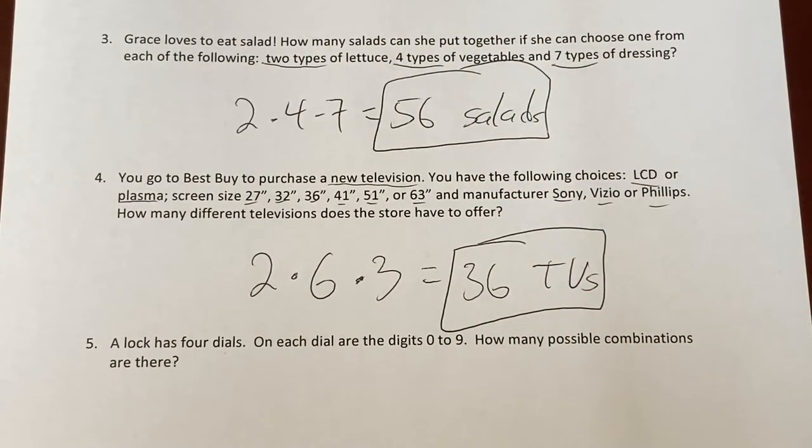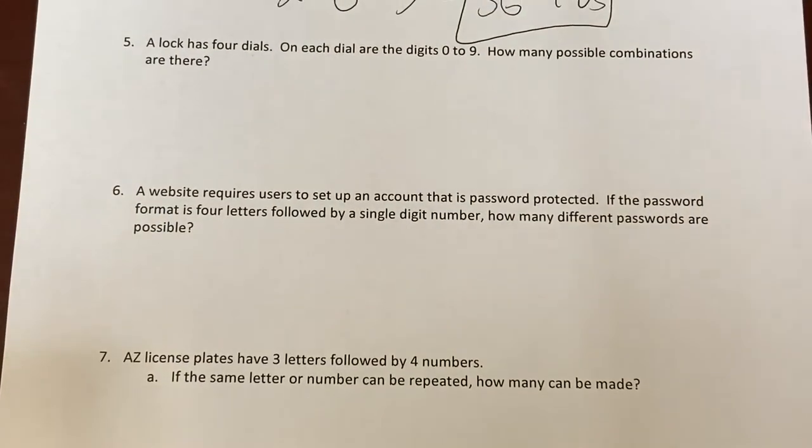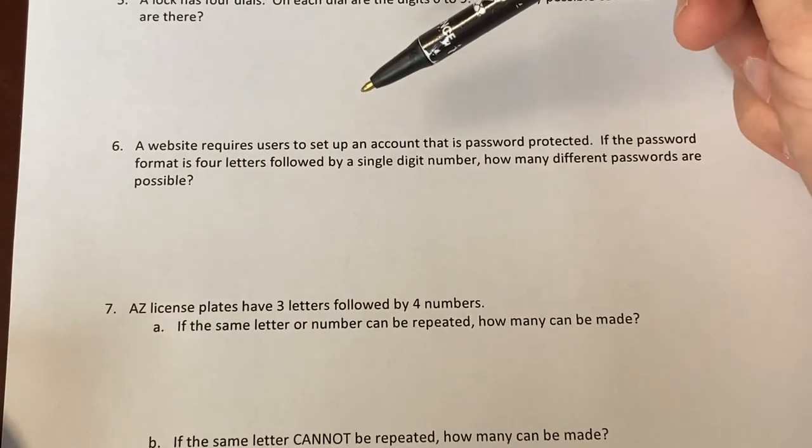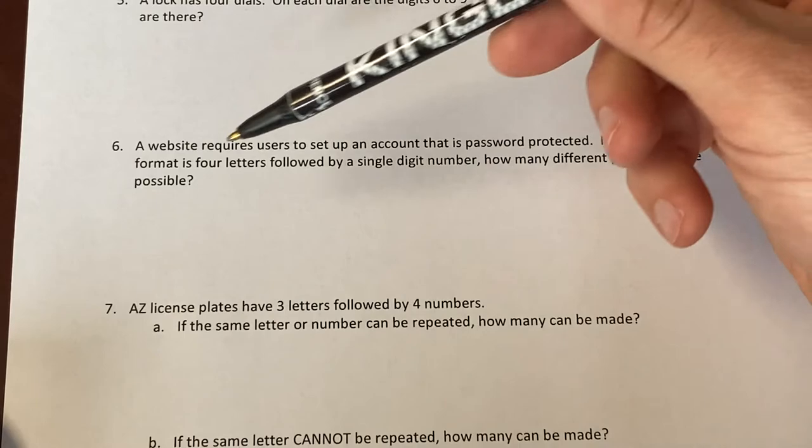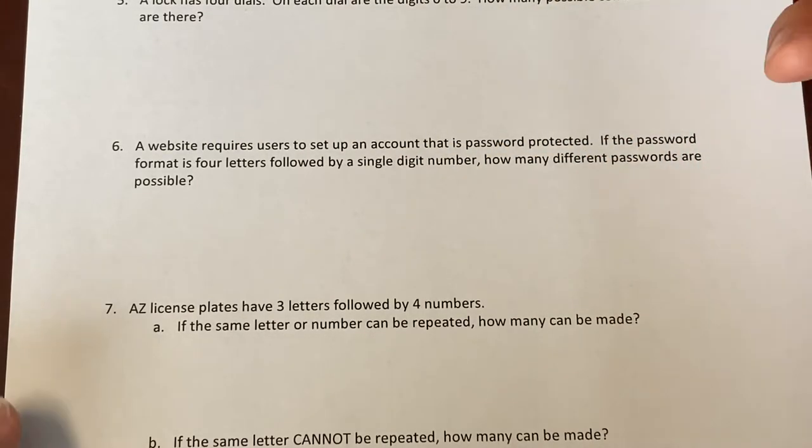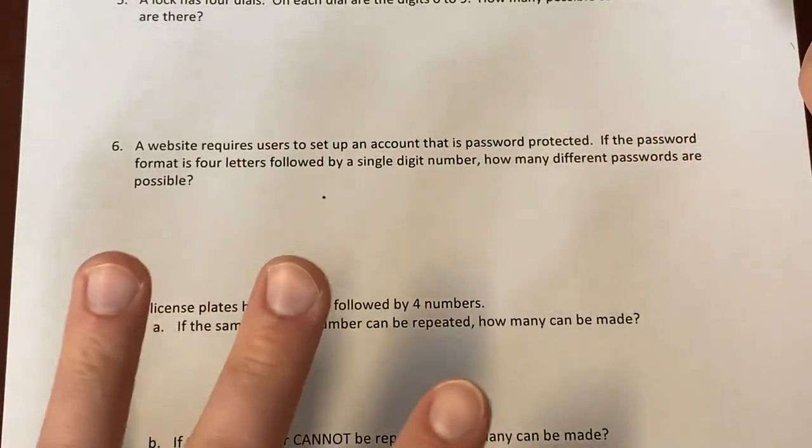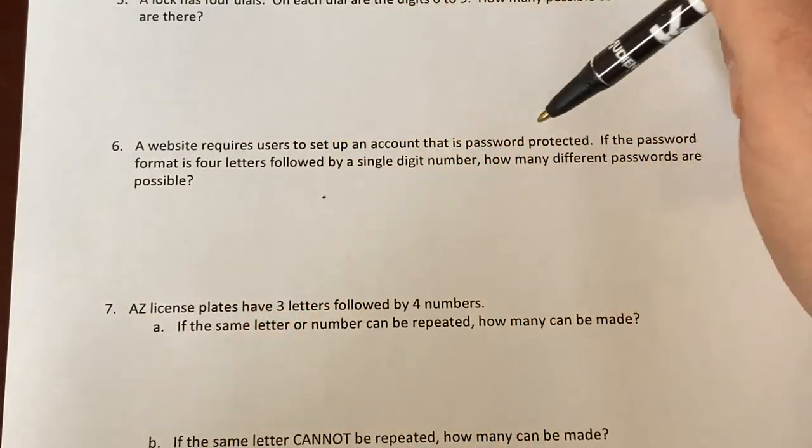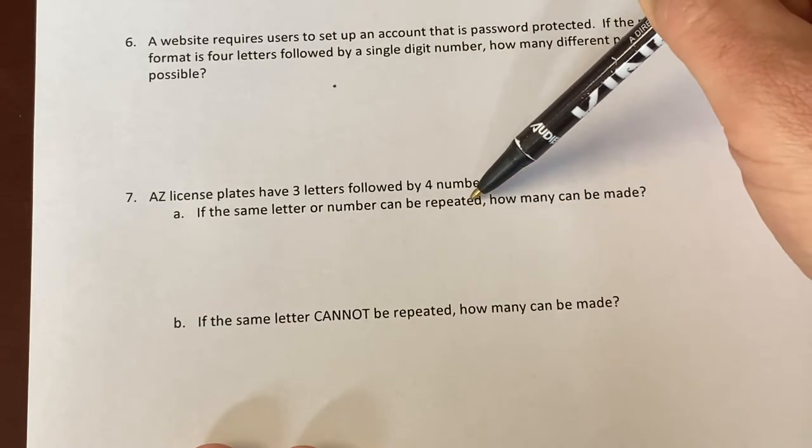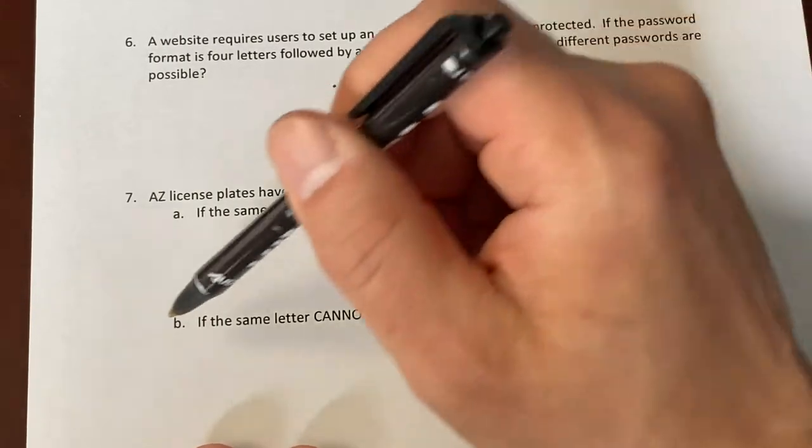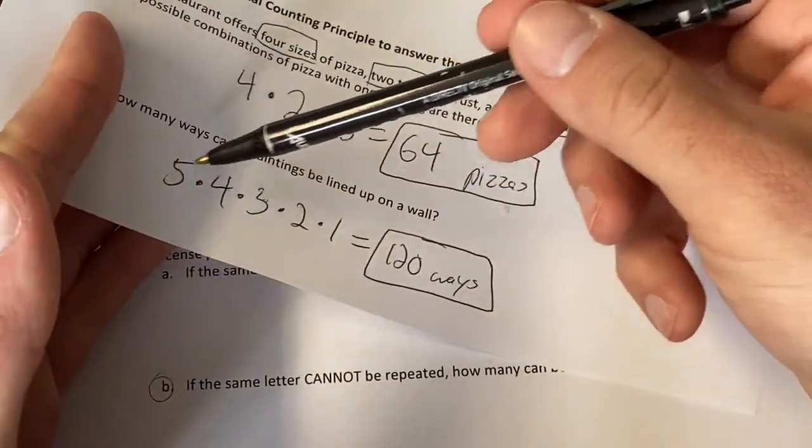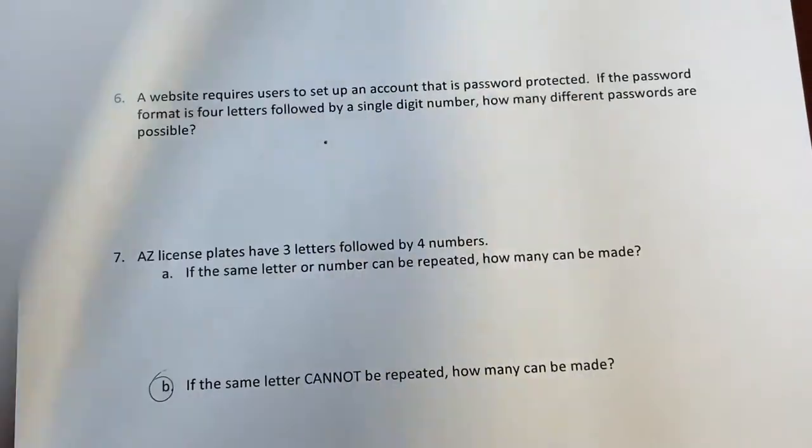So we will give you five, six, and seven here. Five is about a lock that has four dials. Six is a website used to set up an account password protected. Password format is four letters followed by a single number. So how many possible passwords are there? So that's going to be five options. Four different letters and then one number. And then lastly is a license plate problem. In one, you can repeat the numbers. And in the other, you can't repeat the numbers. And this letter B right here is going to be similar to this painting one where the numbers decrease.